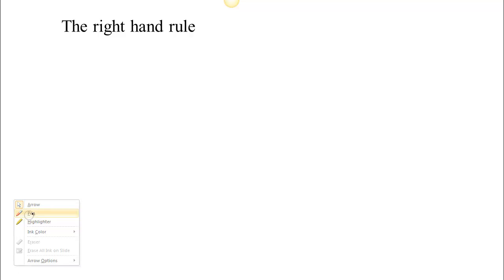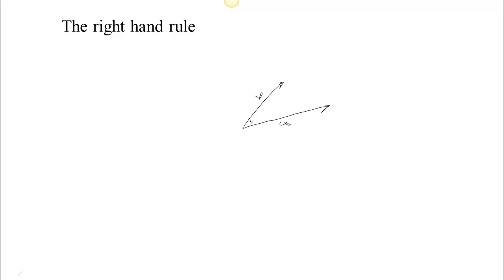We have this operation called the cross product. Geometrically, if you have two vectors u and v, when you take the cross product you end up with a vector that's perpendicular to both of them. So u and v both lie in a plane, and you get a vector perpendicular to both. The length of this vector will equal the area of the parallelogram created by u and v.